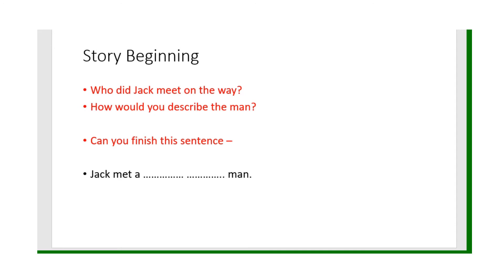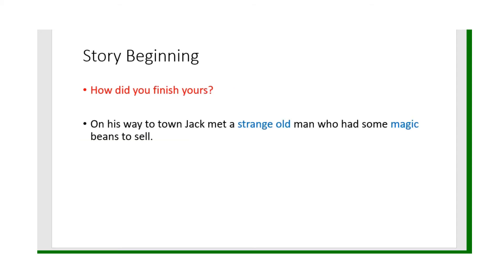Who did Jack meet on the way? How would you describe this man that he met? Yeah, he was a bit odd, maybe a bit old, a bit strange. Look — 'On his way to town, Jack met a strange old man who had some magic beans to sell.'